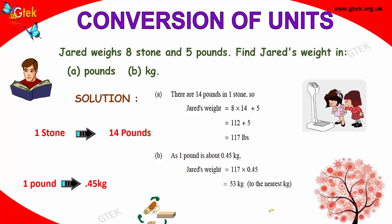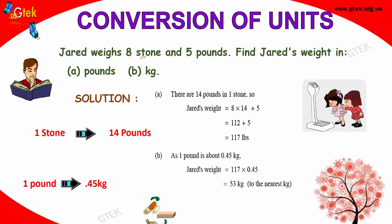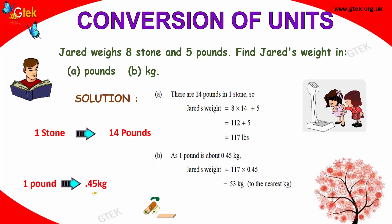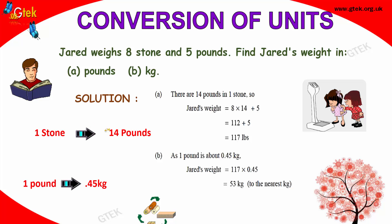Now, weight. Jade weighs 8 stone and 5 pounds. Find Jade's weight in pounds and also in kilograms. So, 1 stone is equal to 14 pounds, and 1 pound is equal to 0.45 kilograms. To convert to pounds: 8 stone is equal to 8 into 14, plus 5 pounds. So 112 plus 5, that's 117 pounds.